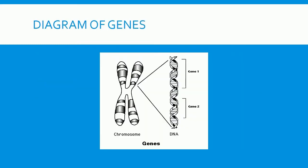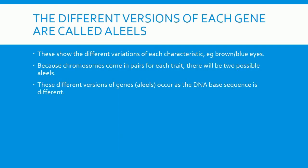Diagram of genes. The different versions of each gene are called alleles. These show the different variations of each characteristic, for example brown or blue eyes. Because chromosomes come in pairs, for each trait there will be two possible alleles. These different versions of genes occur because the DNA base sequence is different.